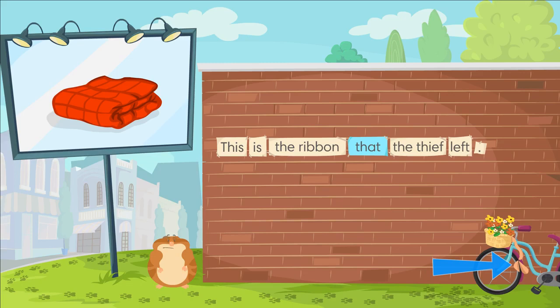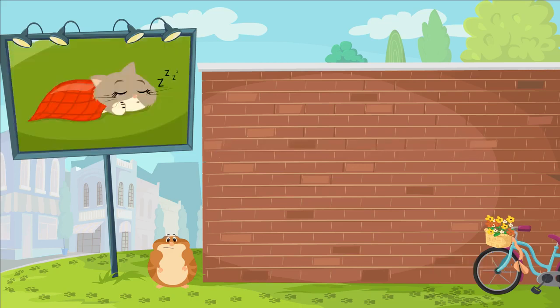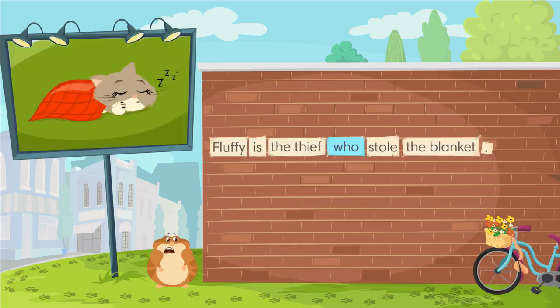Whose ribbon is it? Who's the thief? Oh, it's Fluffy's ribbon. Fluffy is the thief who stole the blanket.